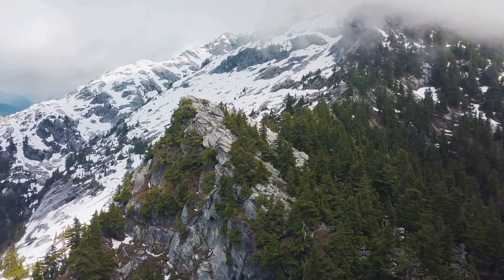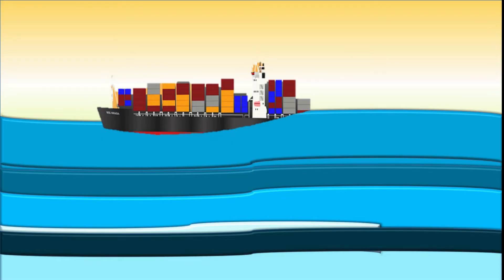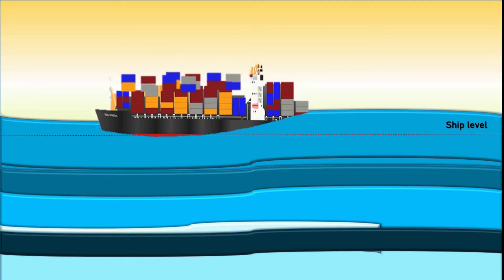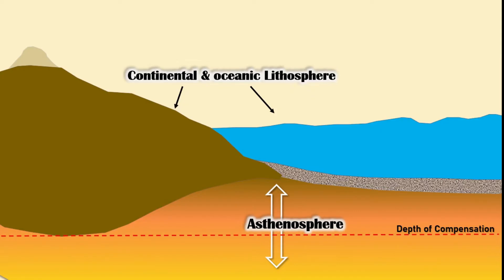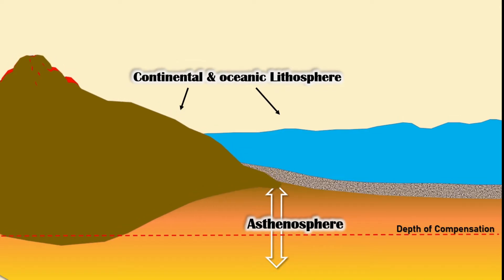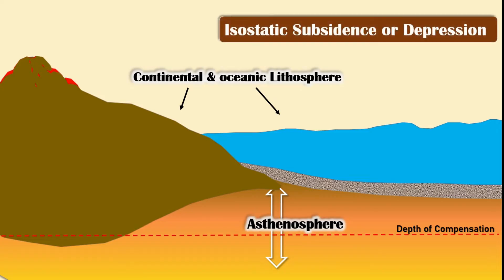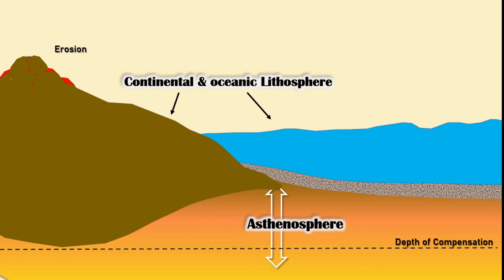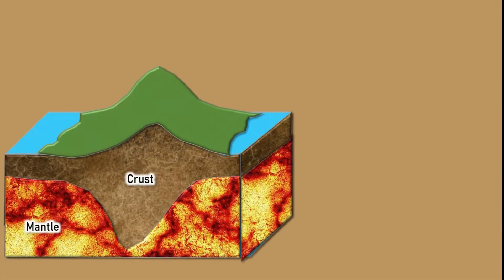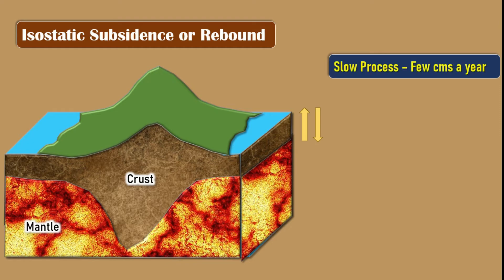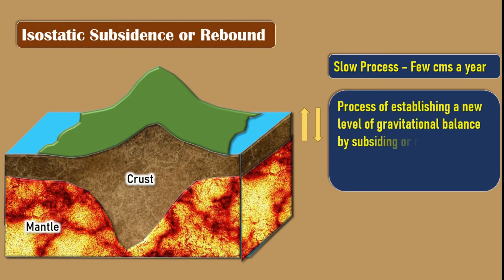There is another aspect to this equilibrium. If more load is added or removed from a ship, the ship will sink more into water if more weight is added, and rise if weight is reduced. The lithosphere behaves somewhat like the ship. If an additional load is placed on an area of Earth's surface, the lithosphere will subside in a process called isostatic depression or subsidence, until it attains a new equilibrium level. If the surface accumulation is later removed, the region will rise in a process called isostatic rebound. The subsidence or rebound of the lithosphere will occur extremely slowly, as flow in the asthenosphere is slow — only a few centimeters per year. This process of establishing a new level of gravitational balance by subsiding or rebounding is called isostatic adjustment or isostatic compensation.